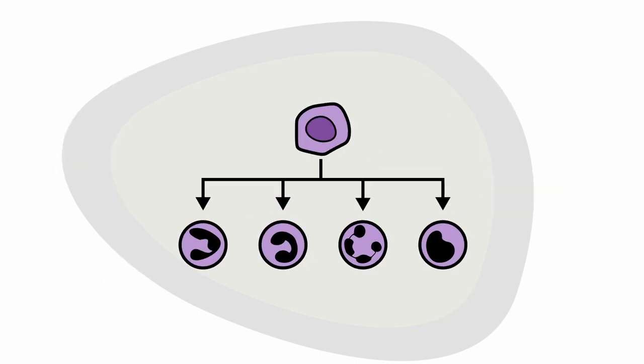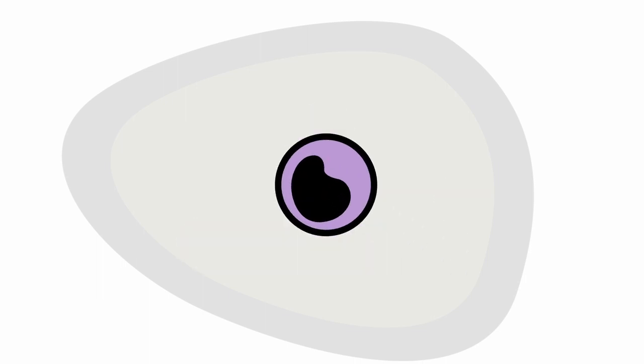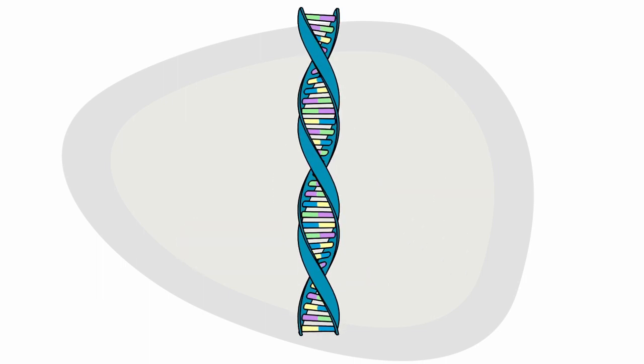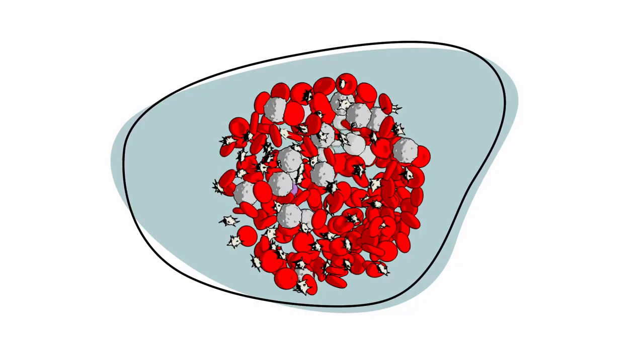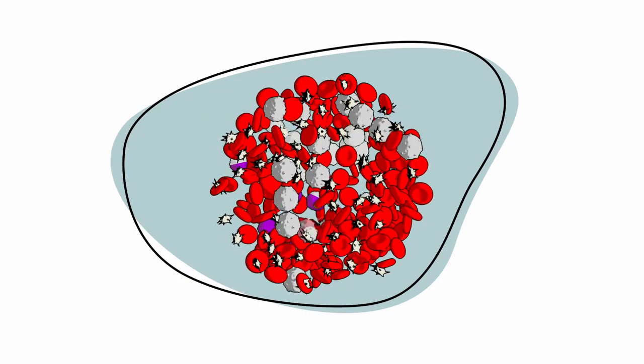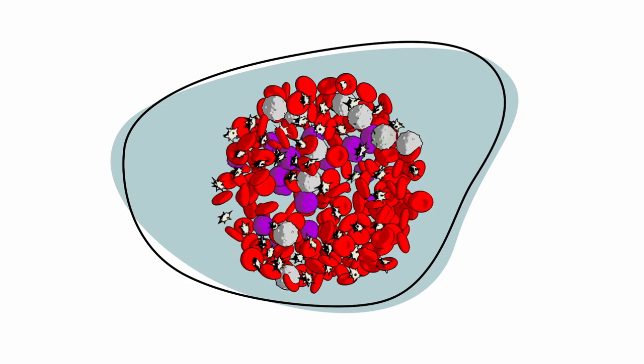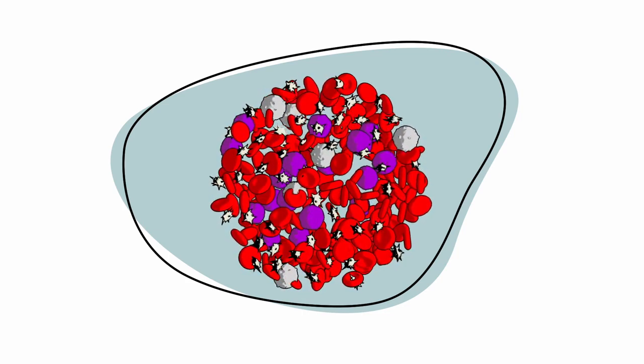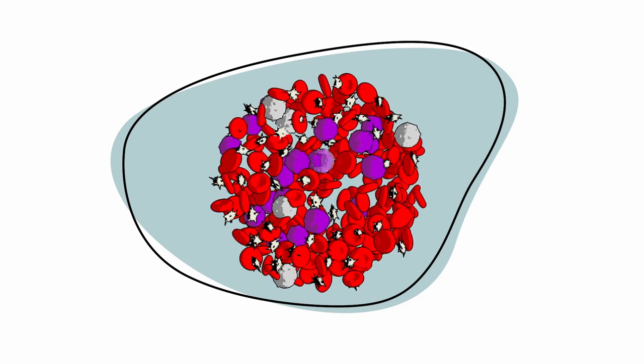With CLL, a type of white blood cell called B lymphocytes undergo changes in the DNA, or genetic code. These cells multiply quickly, upsetting the growth and normal function of healthy cells. Over time, they can spread to other tissues and organs.